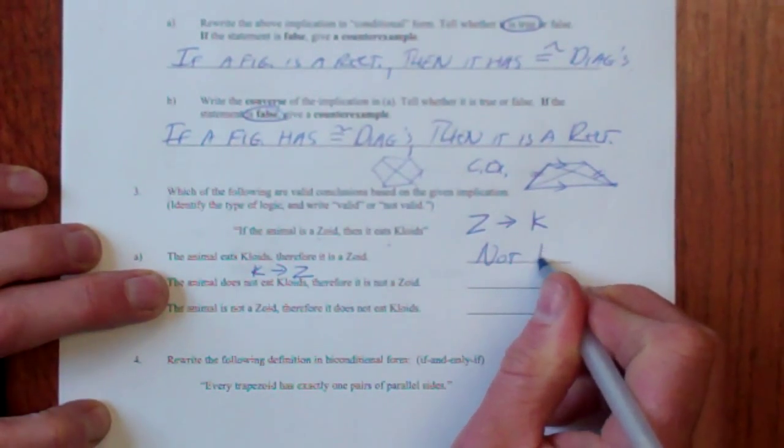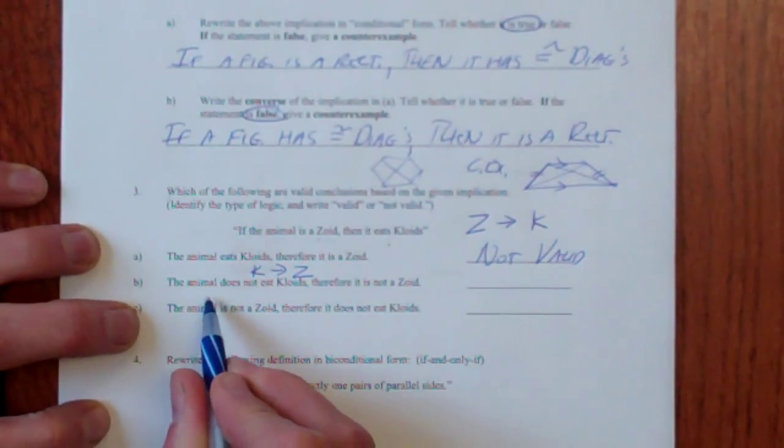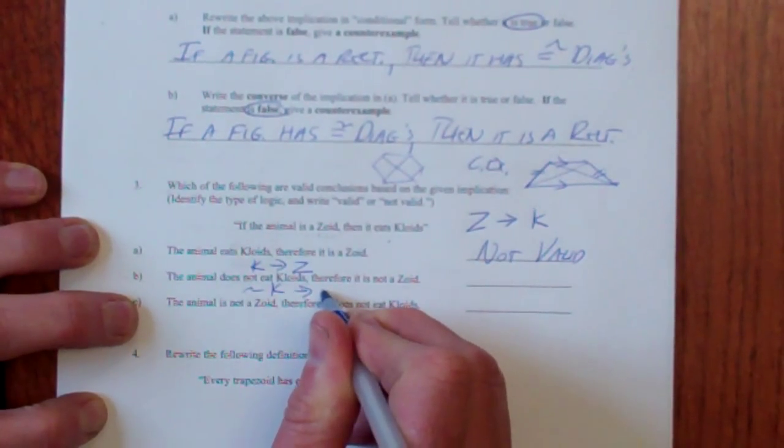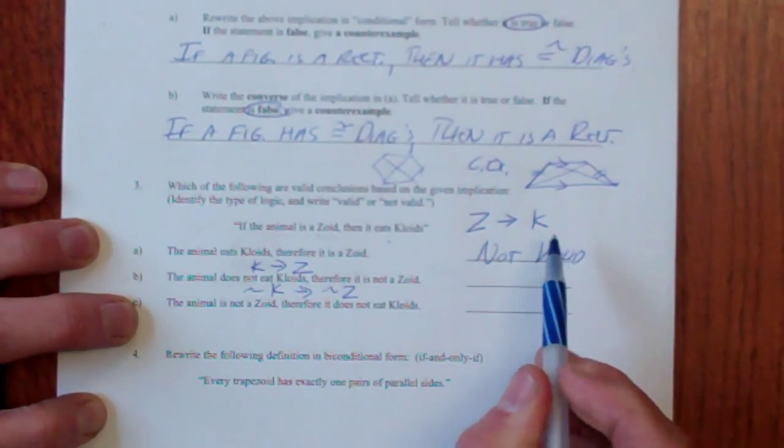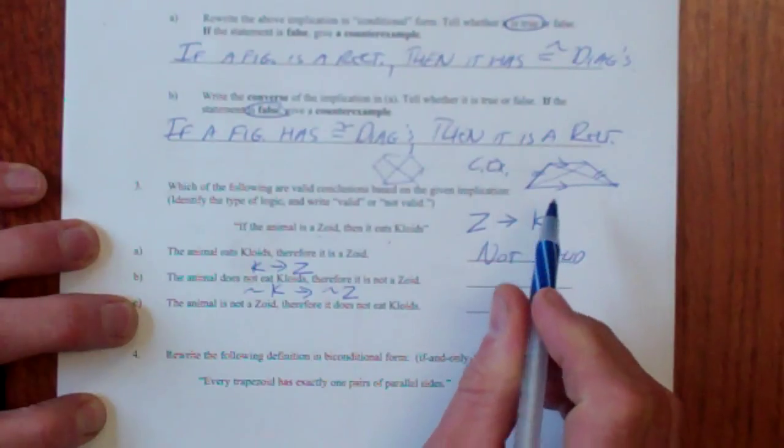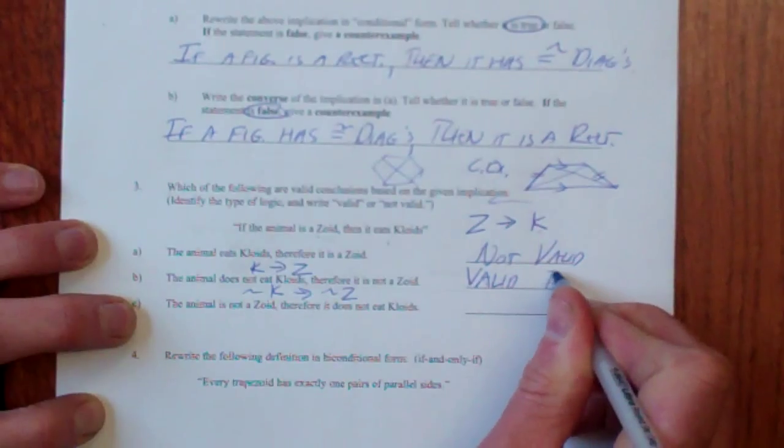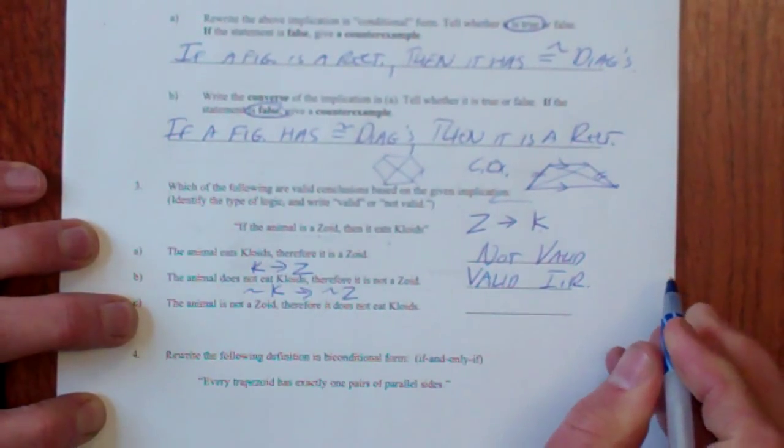Converses are not valid unless it's a biconditional. The animal does not eat cloids, therefore it is not a zoid. It does not eat cloids, therefore. That's the negation going backwards. That is valid. That is the one that's okay. And that's indirect reasoning.